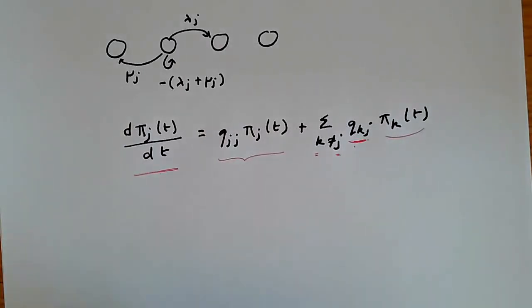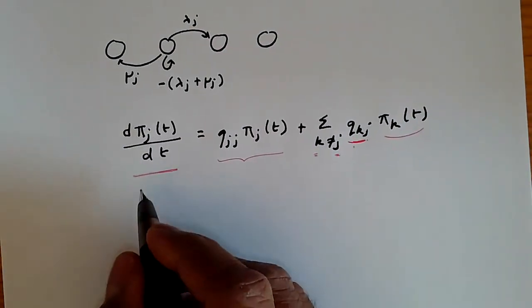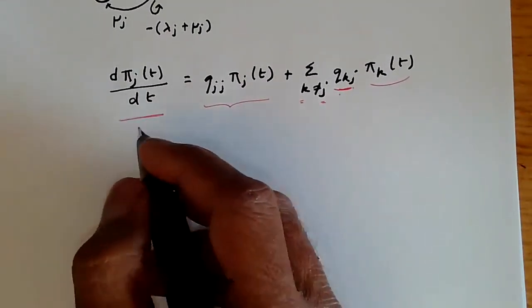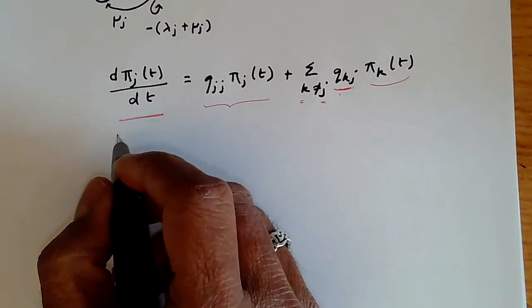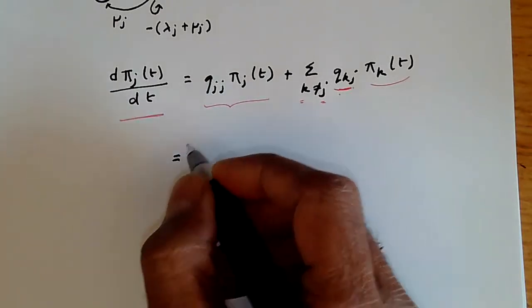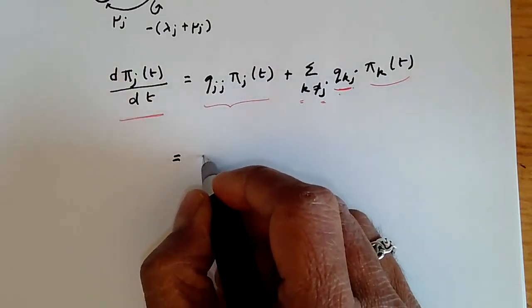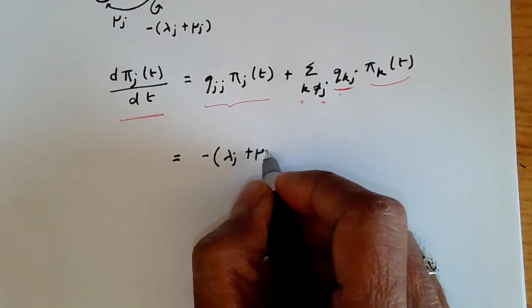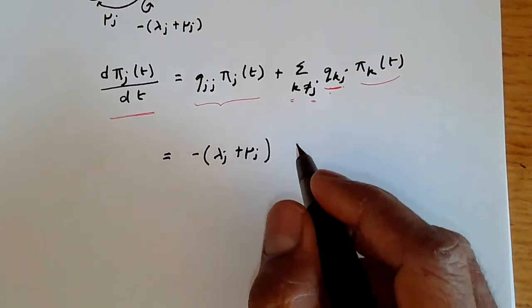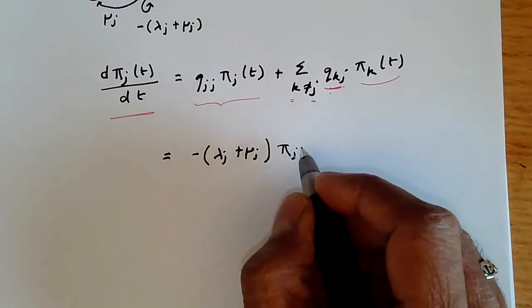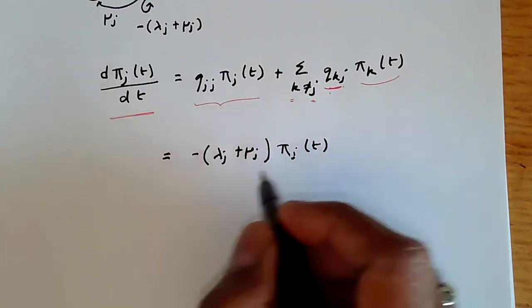Now, if we plug into this the values for a birth-death process, then we can find the transition probabilities for a birth-death process. For a birth-death process, we can plug in the value of q j j, which is nothing more than minus lambda j plus mu j. That's q j j for a birth-death process, and that multiplied by pi j(t) plus